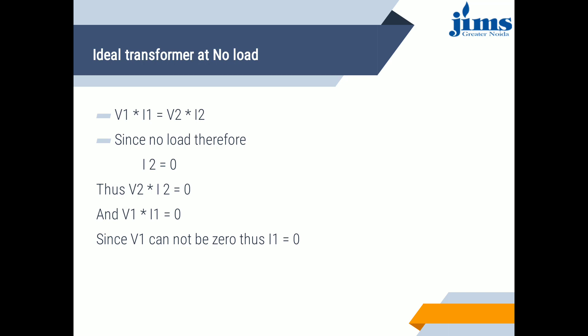Now we discuss about the ideal transformer on no load. No load means when the primary of a transformer is connected to the source of AC supply and the secondary is open; the transformer is said to be at no load, meaning there is no load on the secondary winding.